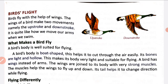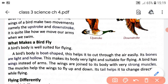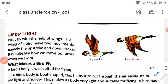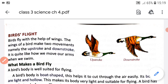Now our next topic is birds' flight - birds ki udaan. Birds fly with the help of wings. The wings of a bird make two movements, namely the up stroke and down stroke. You can see in this picture - this is up stroke, when they fly upward, and this is down stroke, when they come downward. It is called down stroke.